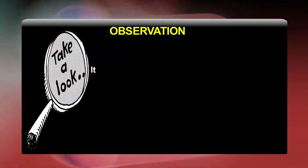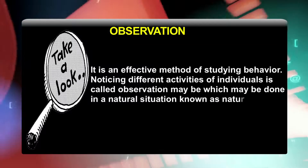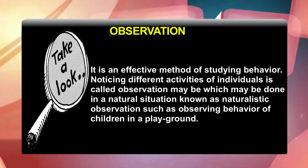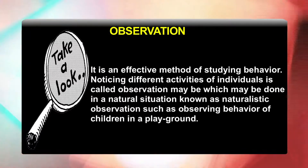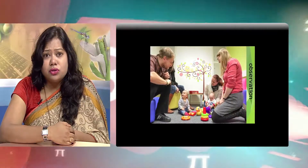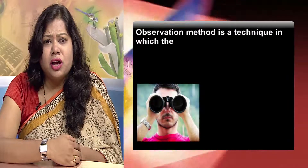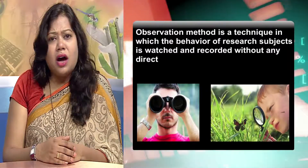Observation. Observation is a very powerful tool of psychological inquiry. It is an effective method of studying behavior. Noticing different activities of individuals is called observation, which may be done in a natural situation — known as naturalistic observation, such as observing the behavior of children in a playground — or in a laboratory, known as controlled observation, such as studying the effects of induced stress on task performance. Observation is a technique in which the behavior of research subjects is watched and recorded without any direct contact.